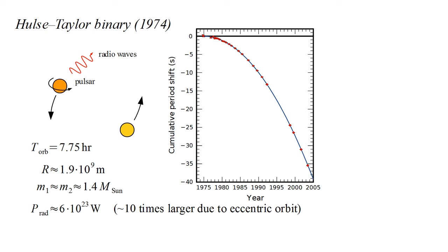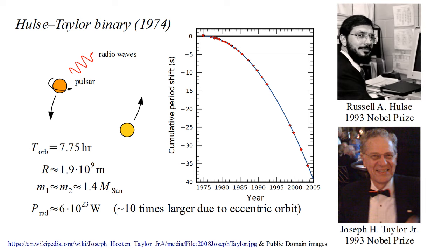Although not a direct observation of gravitational waves, this is very strong circumstantial evidence for their existence. For their work, Hulse and Taylor were awarded the 1993 Nobel Prize in Physics.